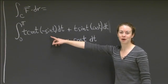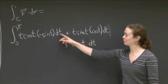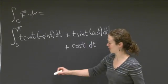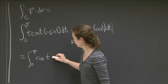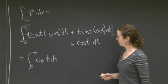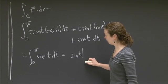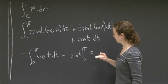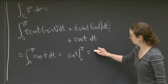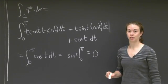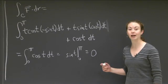This is great. This is why I like this problem—it's going to be nice because I've got t cost times -sint, and t sint times cost. These two add up to 0, so I only have to integrate one thing. I only have to integrate from 0 to π cost dt. I get sint evaluated at 0 and π. Sine of π is 0, sine of 0 is 0. So I get 0 minus 0, I get 0. When I compute the line integral of f dot dr over that helix, I actually get 0.